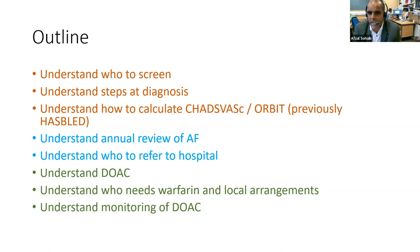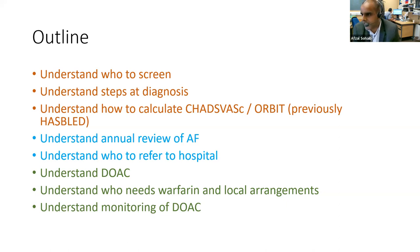The three areas are: general evaluation and finding AF — so screening people, what to do when you first diagnose someone with AF, calculating the CHADSVAS score, etc. Then ongoing management: annual reviews, when to refer to secondary care. And the third area — and it's interesting we've got a couple of pharmacists in the chat — DOACs, when to use warfarin, and monitoring of DOACs as well.